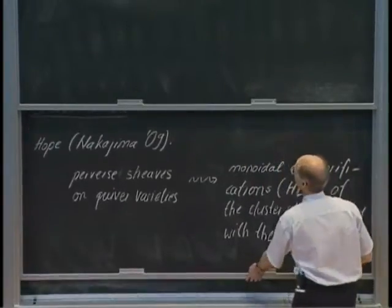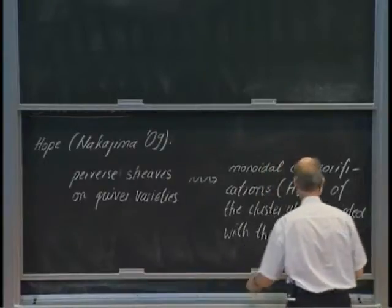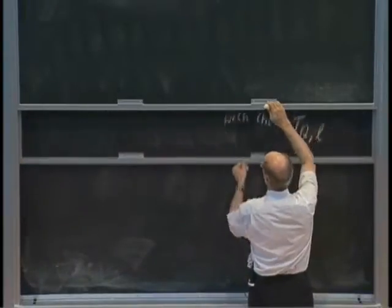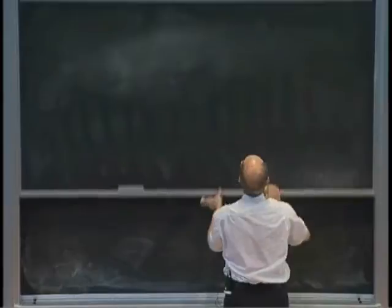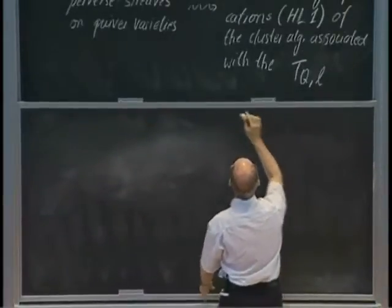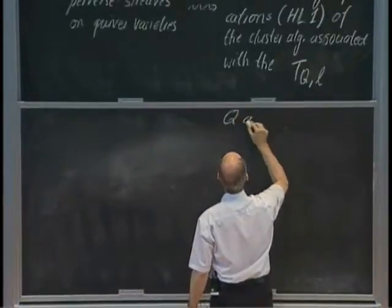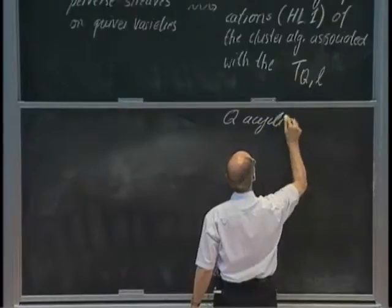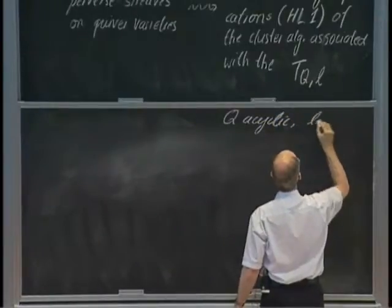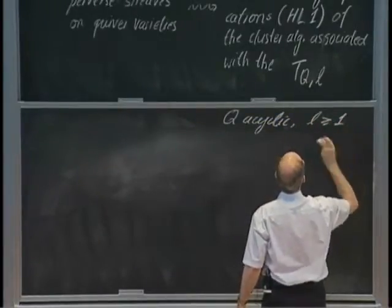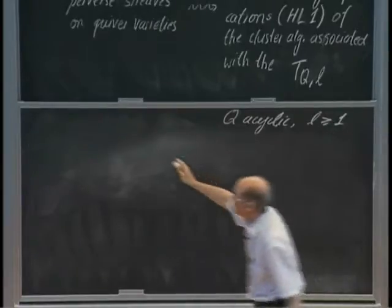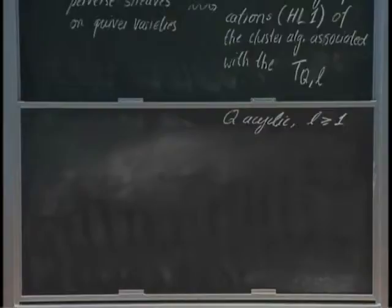So here Q is an acyclic quiver. And L is an integer greater or equal to 1, the so-called level. And here you see a representative example of such a quiver. You start from your acyclic quiver,